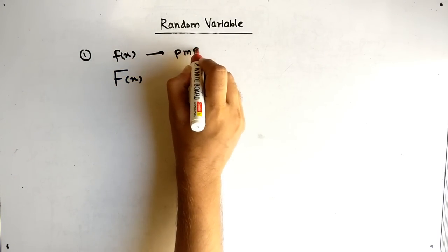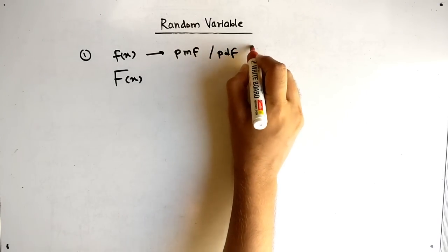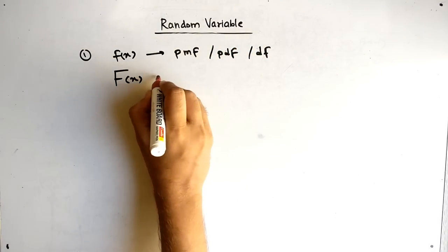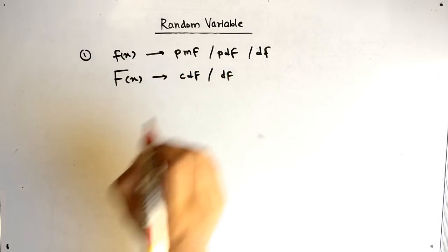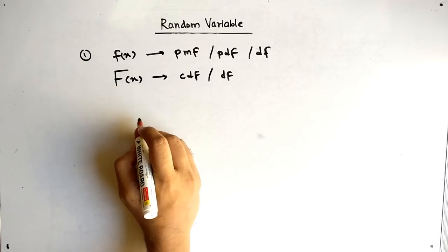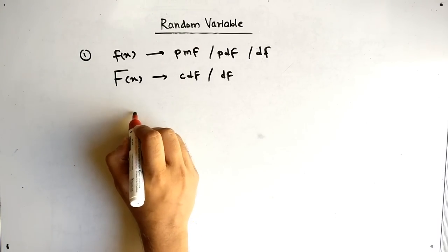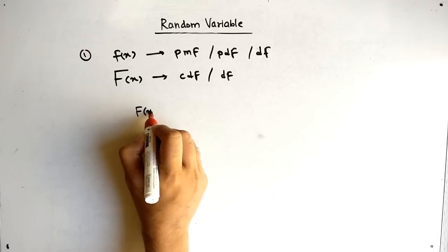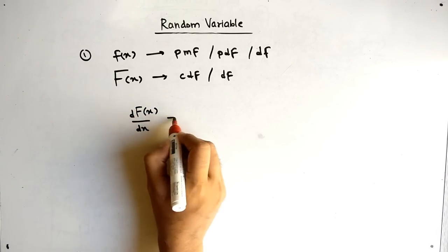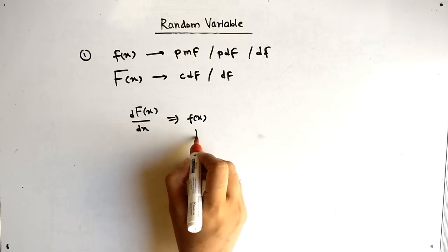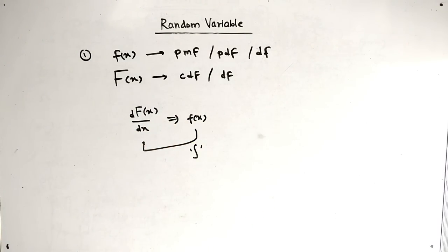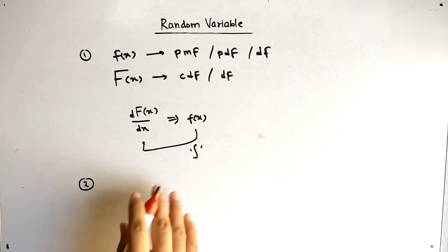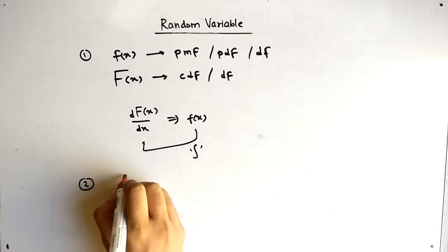The first basic is: what is small f(x) and what is capital F(x)? Small f(x) means probability mass function, also known as probability density function or density function. Capital F(x) means cumulative distribution function. They are interconnected — when we differentiate F(x) with respect to x, we get f(x), and when we integrate f(x), we get F(x).